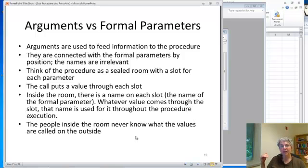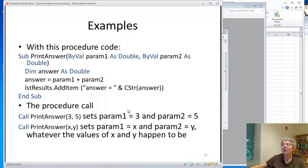So the arguments are fed to the procedure by means of the formal parameters, and they're connected by position. So if you want to, I made up this thing, you can think of it this way. The procedure is like a room with two slots in the walls, like mail slots. And only on the outside can anyone see what those are called, but on the inside, they're called by the names of the parameters. So, whatever values get fed in there, it doesn't matter what they were called on the outside. It only matters inside the procedure what they were called on the inside, and those are the names of the formal parameters.